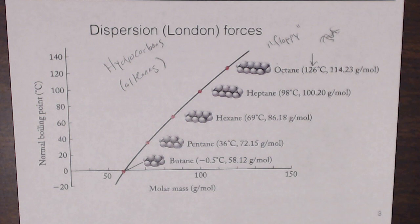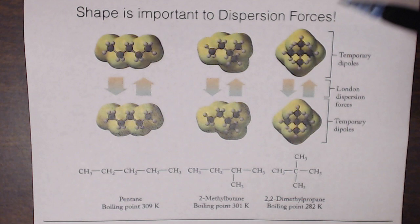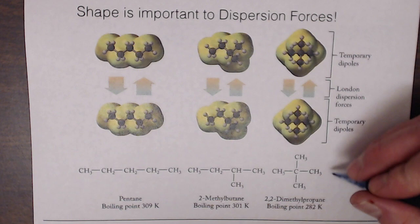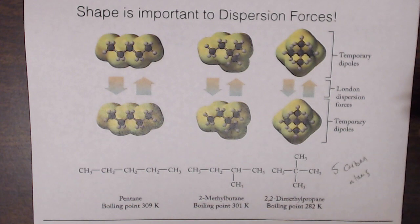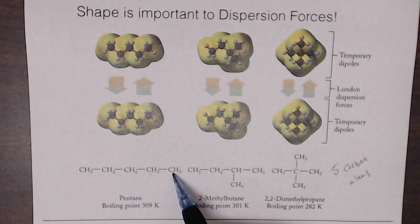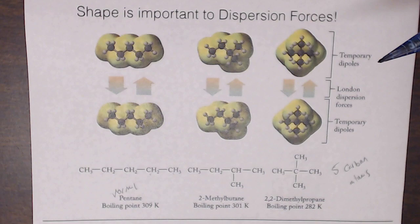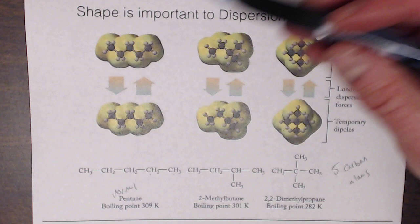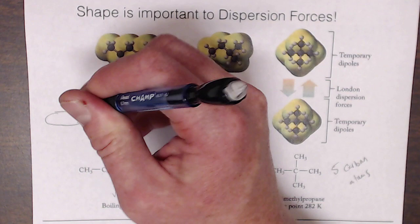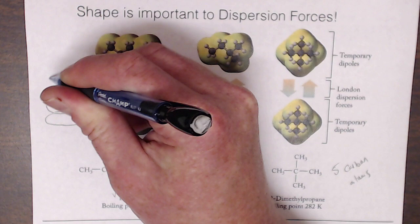Shape is also important to dispersion forces. Looking at hydrocarbons with five carbon atoms: normal pentane (n-pentane), with all five carbons in a chain, has a boiling point of 309 Kelvin. Its long, skinny shape packs most efficiently — like hot dog shapes fitting tightly together with minimal space between molecules.